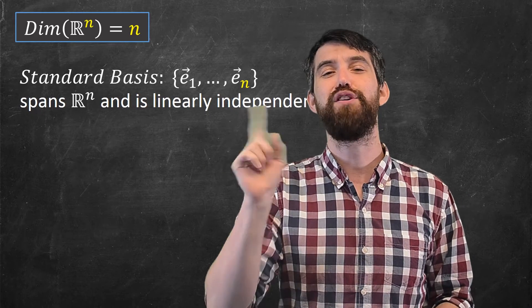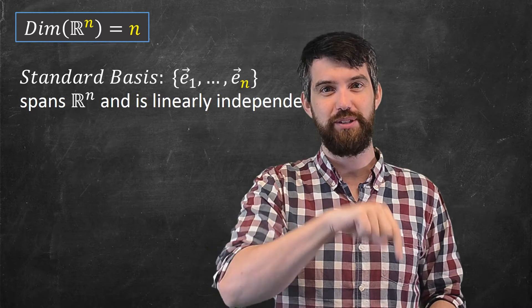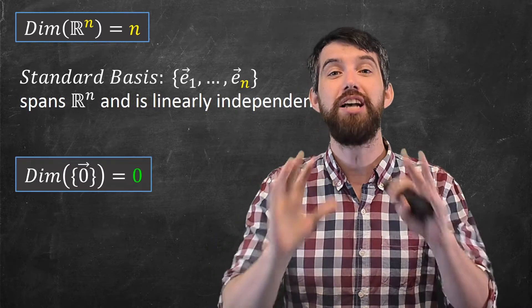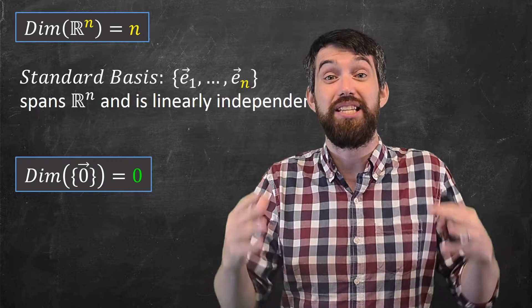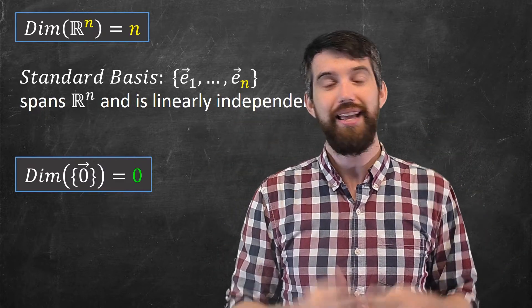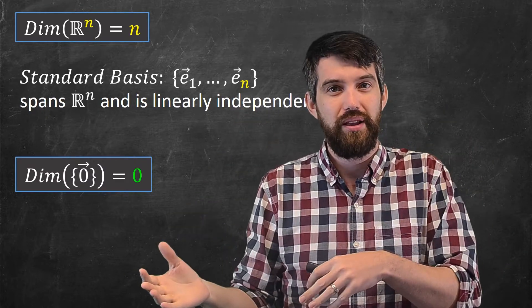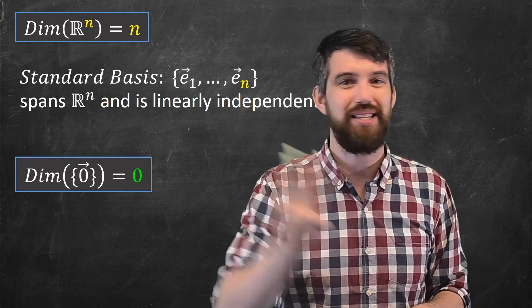Okay, here's a different pathological example. The smallest possible subspace of R^n is just the zero vector. And I claim the dimension of the subspace that is just the zero vector is indeed equal to zero. By the way, you might remember subspaces had three properties.